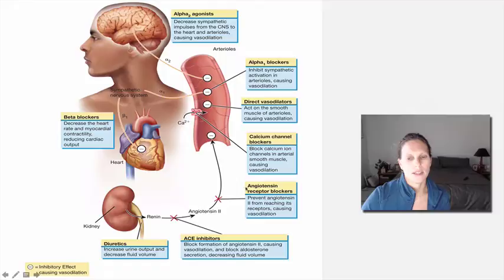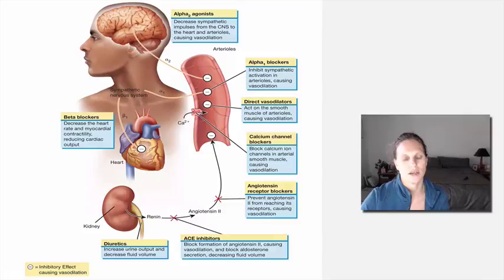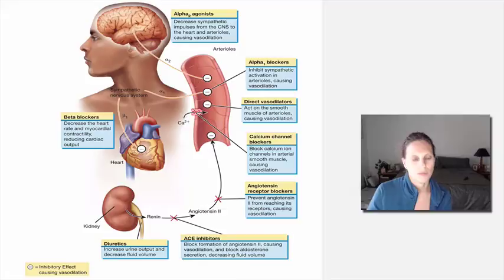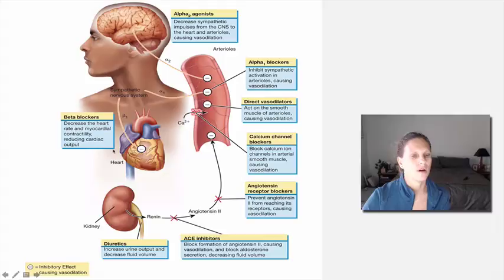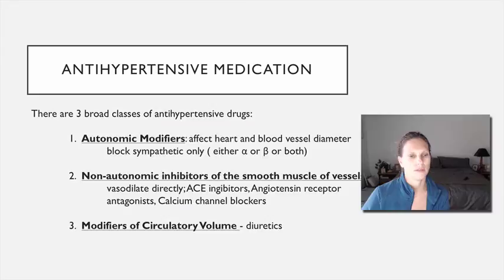Angiotensin receptor blockers and ACE inhibitors are more or less clinically the same and both cause vasodilation. ACE inhibitors also block aldosterone release, which decreases fluid volume. Diuretics increase urine output, decreasing fluid volume. Beta blockers act directly on the heart — ideally beta-1 selective — decreasing heart rate, decreasing contractility, and reducing cardiac output.